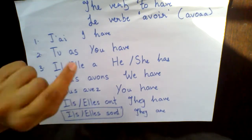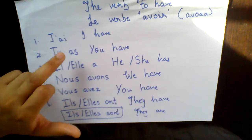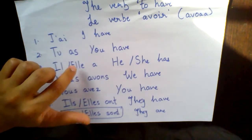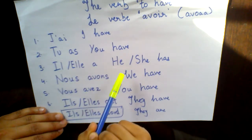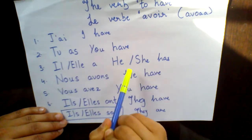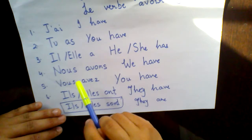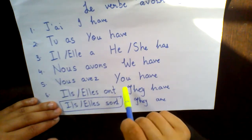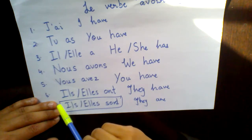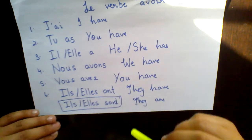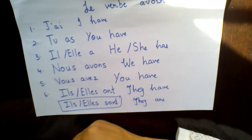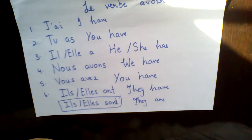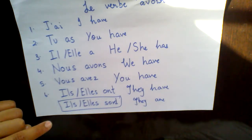Let's revise for today: j'ai means 'I have', tu as means 'you have', il/elle a means 'he/she has', nous avons means 'we have', vous avez means 'you have' (formal), and ils/elles ont means 'they have'. This is all for the verb avoir. In the next lecture I will be teaching you another verb. If you like this video please like and subscribe, and for any doubts please mention them in the comments below.